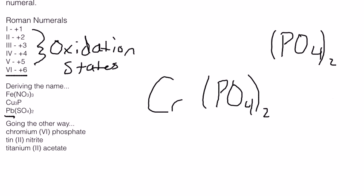And so our final formula, I think I need to clean this up so that we can understand this a little better. It would be Cr parentheses PO4 2. That's how we would write that.